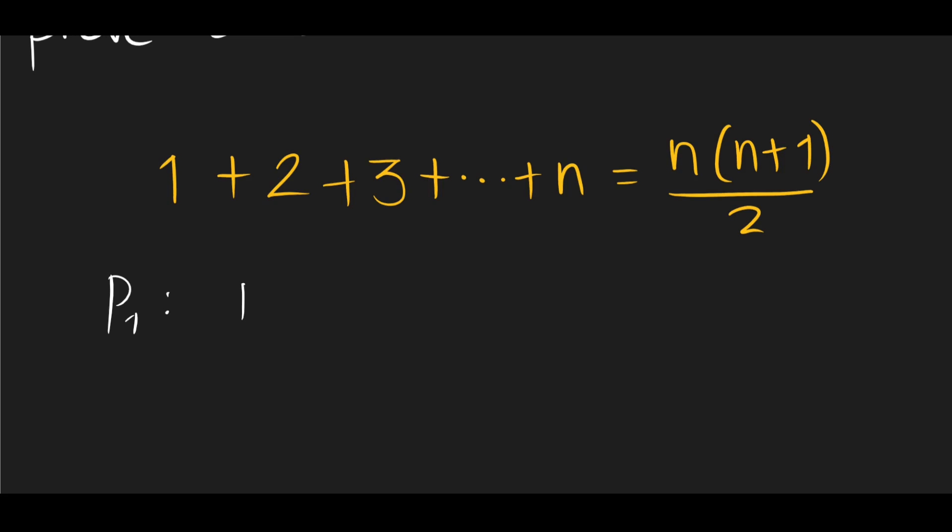So when n is equal to 1, we have 1 on the left-hand side, and on the right-hand side, 1 times 1 plus 1 all over 2. Now, if we take a look closely, this will evaluate to 1. Therefore, 1 equals 1, and we've shown that P1 is indeed true.